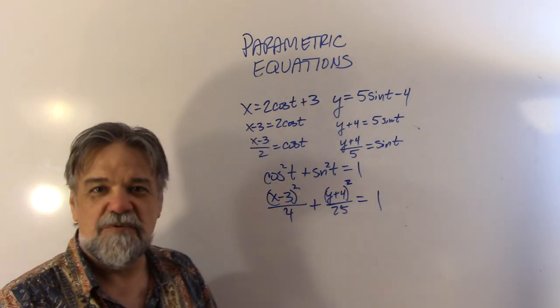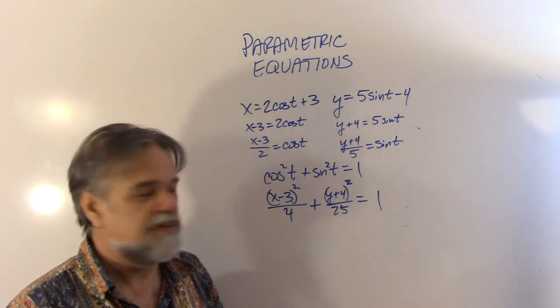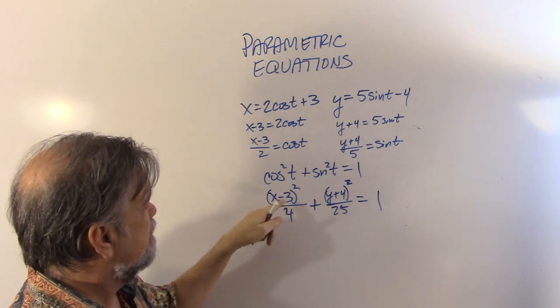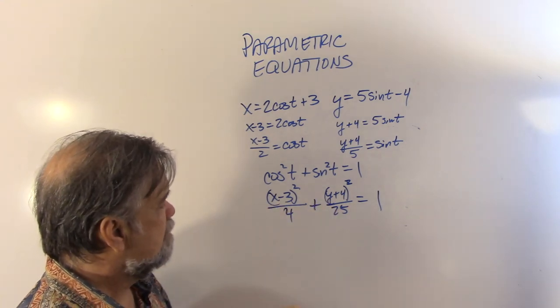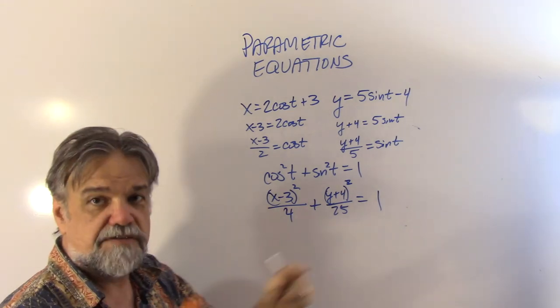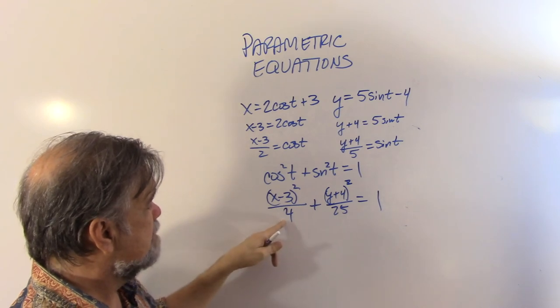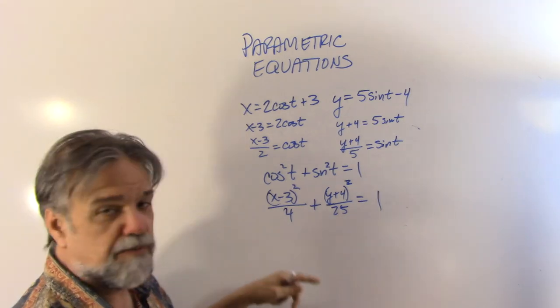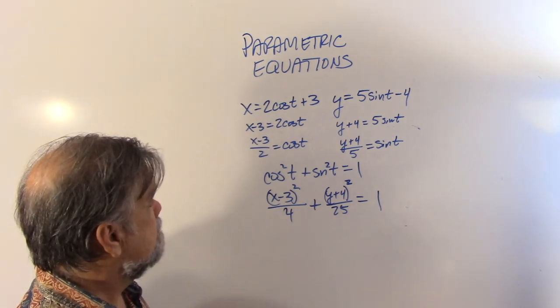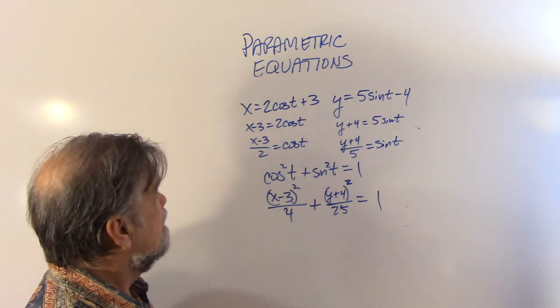And wow, we just went straight into the formula for an ellipse. An ellipse whose center is the point (3, -4), whose major axis is 5 units, well, actually 10 units long. Minor axis is 4 units long. And by the way, what I'm doing is I'm taking the square root of this and then doubling it. And all right. Pretty good, huh?